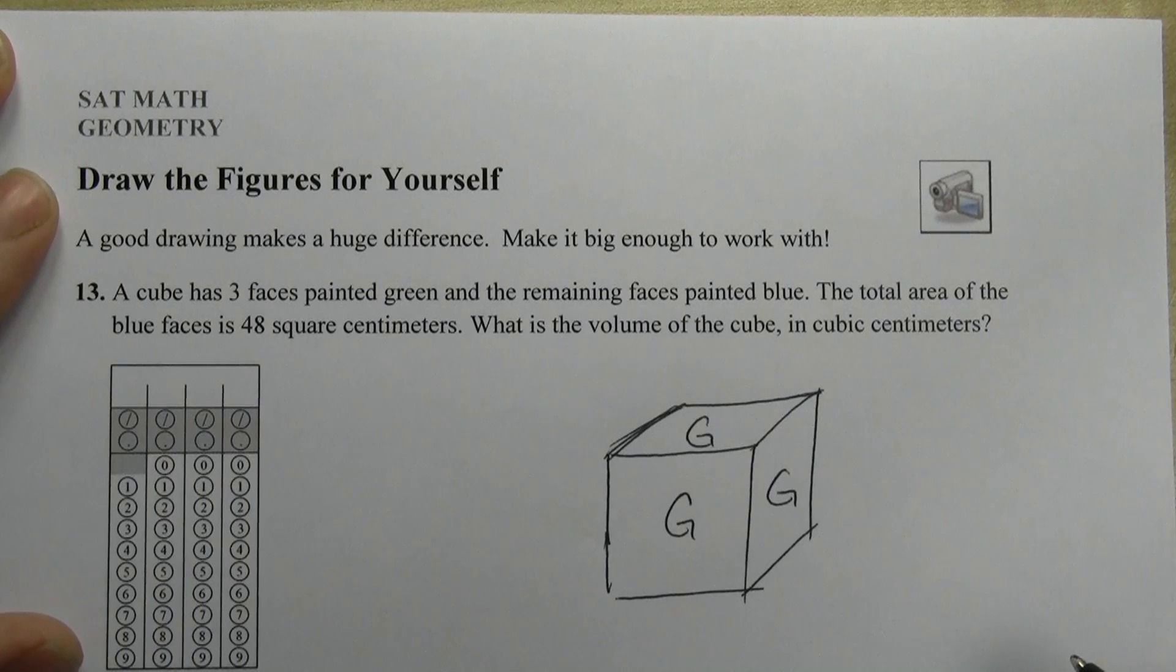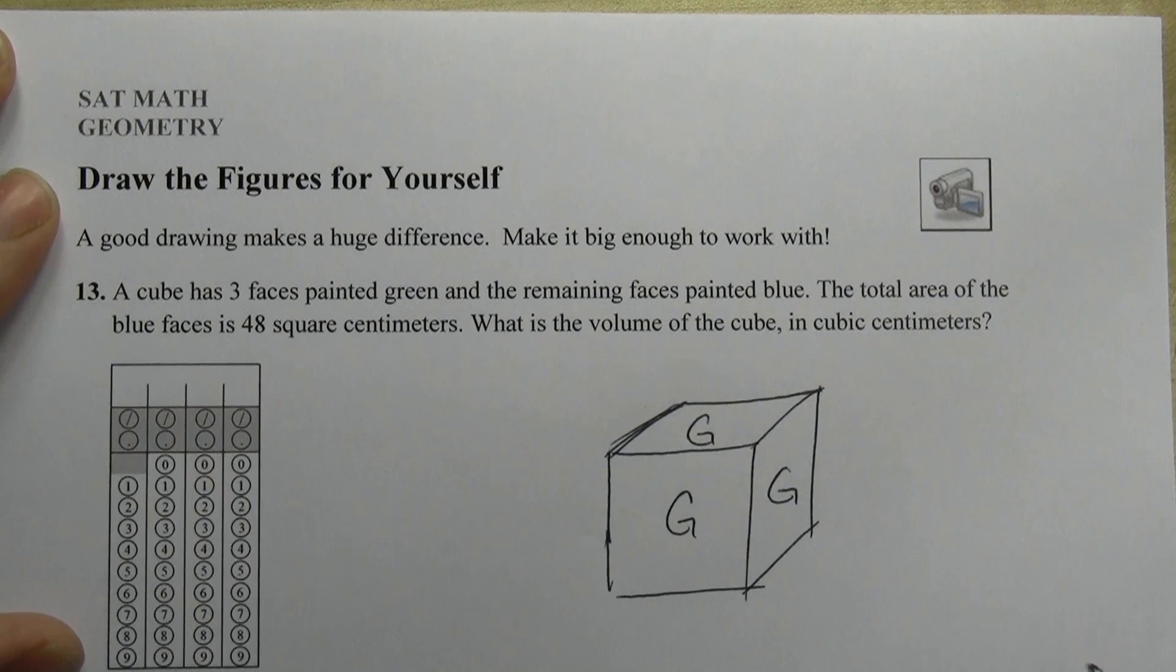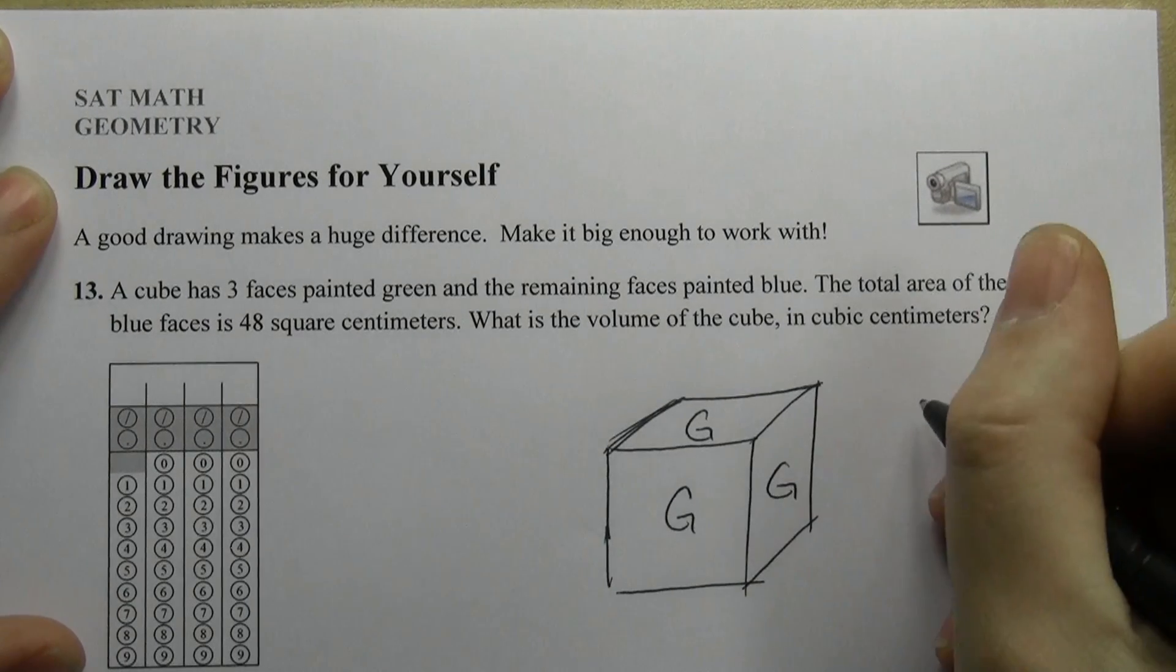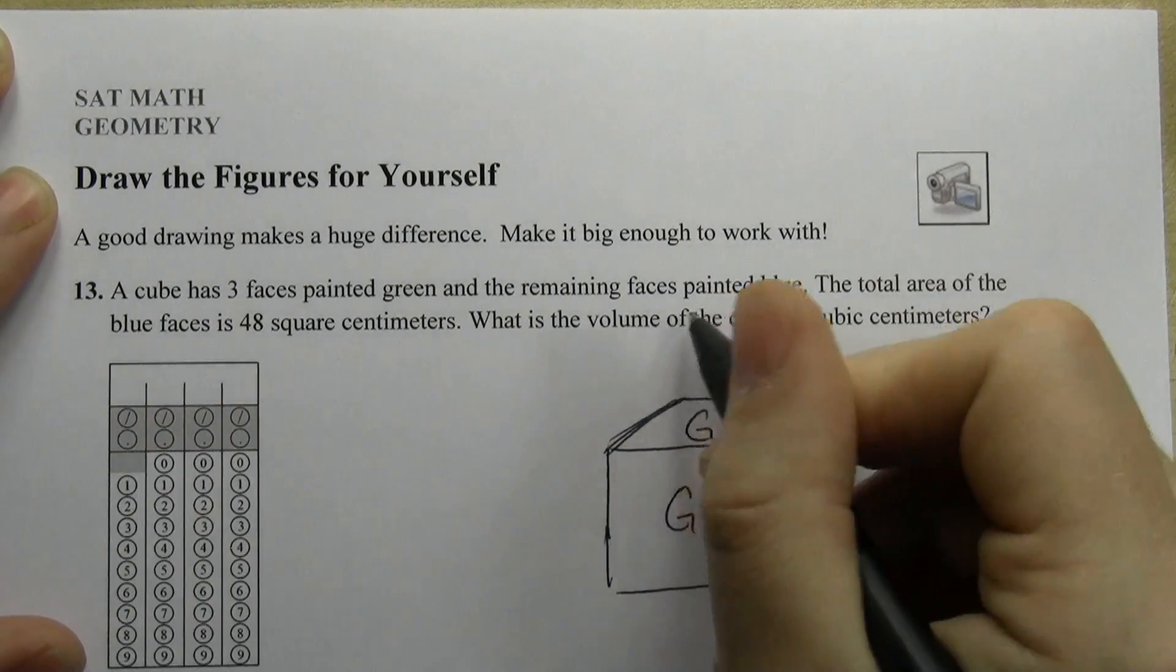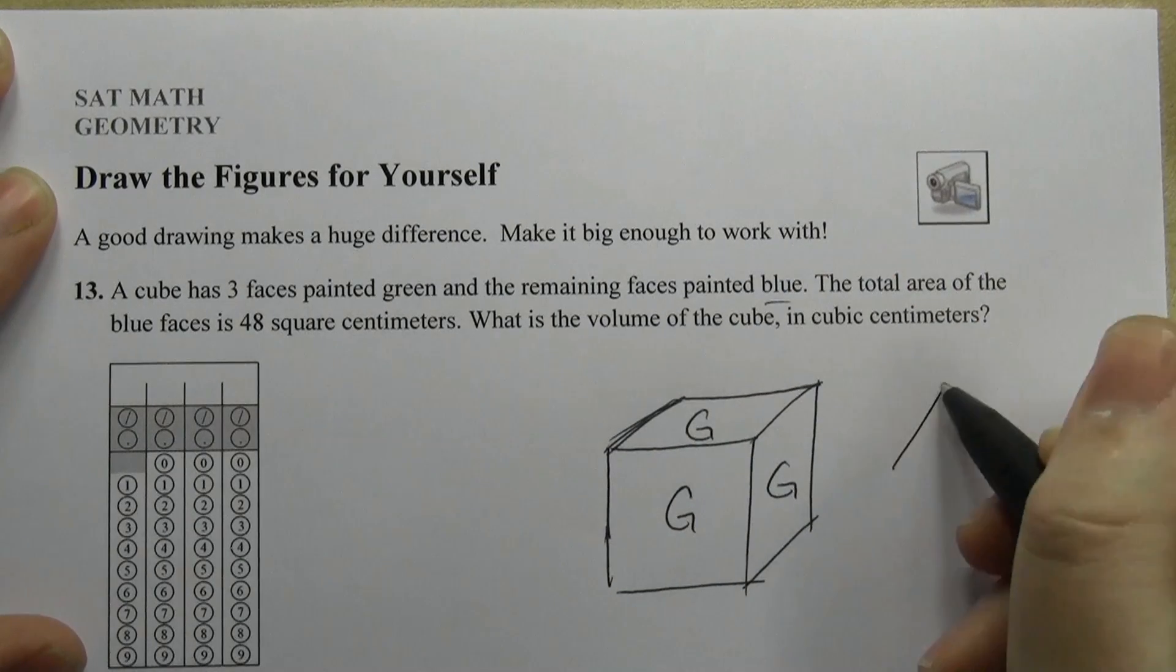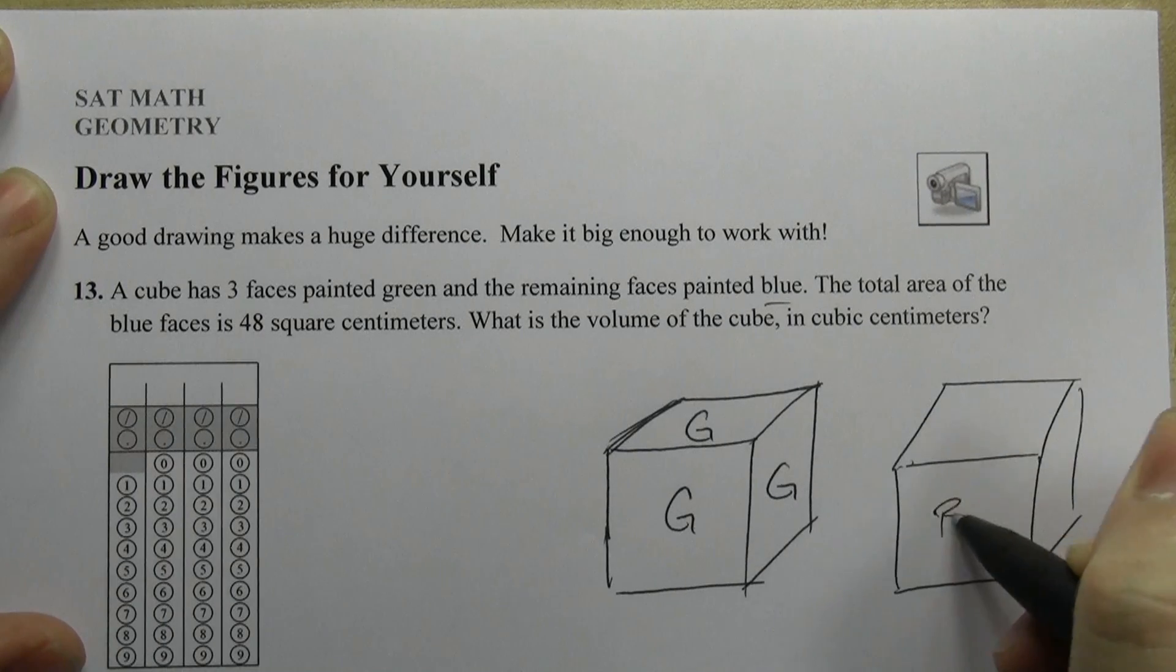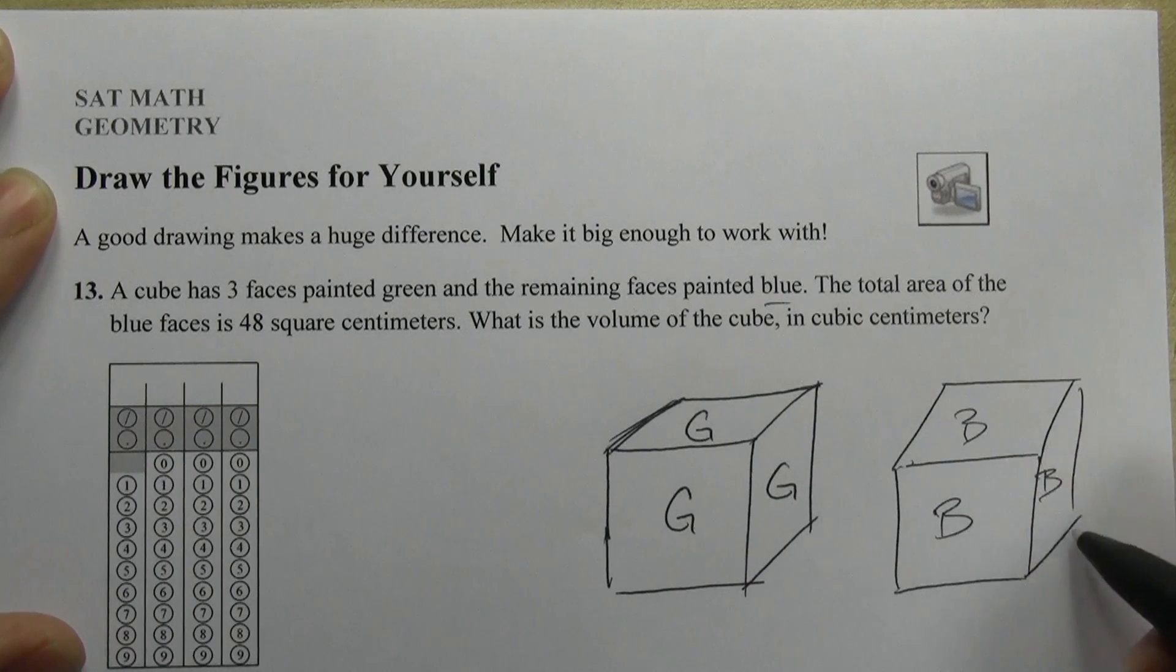Now why is this important? Why did the picture help me with this? Well, it's not always easy to remember that a cube has six faces. So if three of the faces are green and the rest are painted blue, then the other three faces are going to look like this. Blue, blue, and blue.